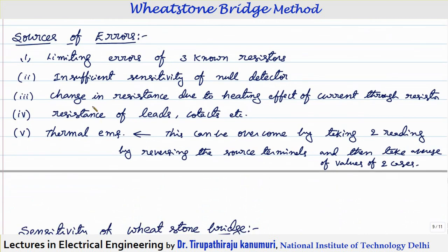The different sources of error in the Wheatstone bridge are: first, limiting errors of the three known resistances — there will always be some limiting error since a resistor is specified as, for example, 1 kΩ ±1%, meaning its value varies within that range. Second, insufficient sensitivity of the null detector can also lead to errors. Third, change in resistance due to the heating effect of current — the I²R loss produces heat that changes resistance values. Fourth, resistance of leads and contacts, which particularly affects low resistance measurement.